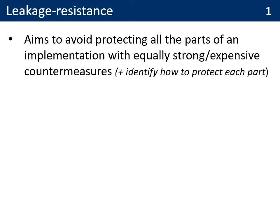As a starting point, I would like to recall what leakage resistance is about. In summary, the idea is that since countermeasures against side-channel attacks are very expensive, it can be interesting to avoid protecting all the parts of an implementation with equally strong countermeasures, and if possible, also to identify which part of the implementation to protect and how much.